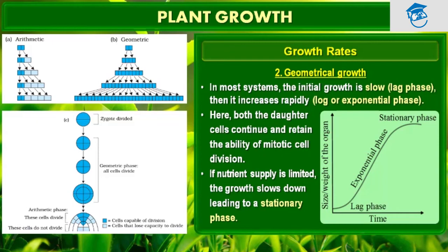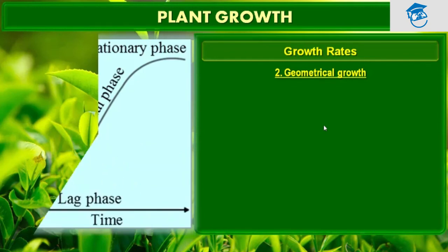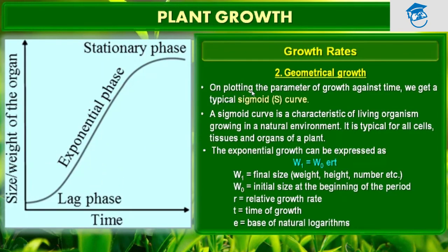Can you think of more similar examples? What kind of curve can you expect in a tree showing seasonal activities? On plotting the parameter of growth against time, we get a typical sigmoidal curve — if we plot size or weight of the organ on the y-axis and time on the x-axis, then we get an S-shaped curve, which we also call a sigmoidal curve. A sigmoid curve is a characteristic of living organisms growing in a natural environment, typical for all cells, tissues, and organs of a plant.